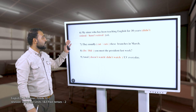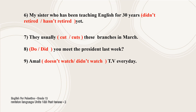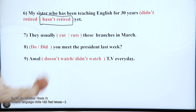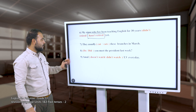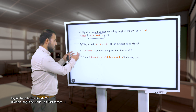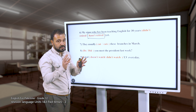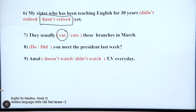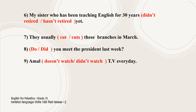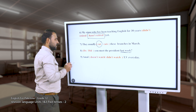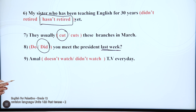Sentence six: 'My sister, who has been teaching English for 30 years, hasn't retired yet.' We have the keyword 'yet,' so the correct answer is 'hasn't retired yet.' Sentence seven: 'They usually cut these branches in March' - 'they' is a plural subject, so we don't add -s to the verb. Sentence eight: 'Did you meet the president last week?' - we are asking about an action that happened in the past, so we use past simple with 'did.'